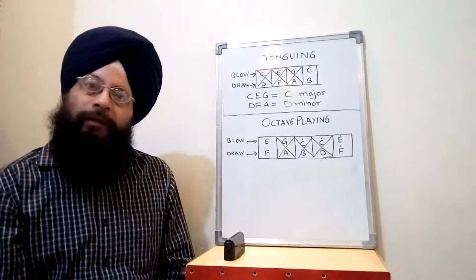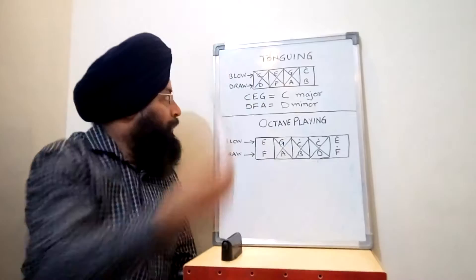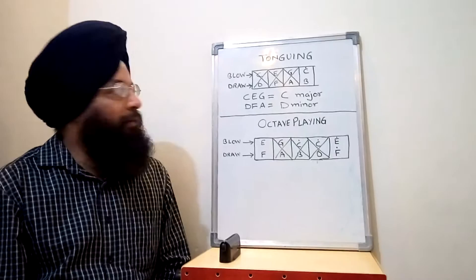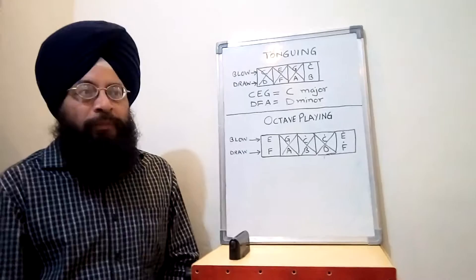So first let me describe a very important aspect in harmonica playing: tonguing. The first thing is why do we do tonguing? Basically, tonguing is used to give the chords along with the single note playing.